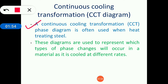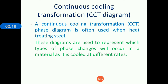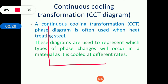Continuous cooling transformation phase diagrams are often used when heat treating steel. In the case of heat treating steel, we consider the CCT diagram. These diagrams are used to represent which type of phase changes will occur in a material as it is cooled at different rates of cooling. Different cooling rates produce different microstructures.